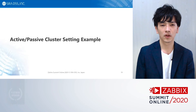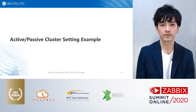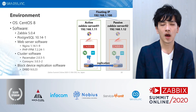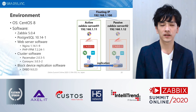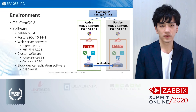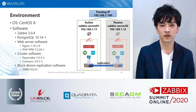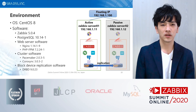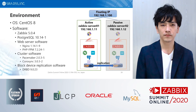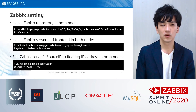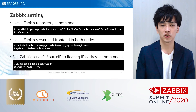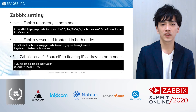I will show an example of the Zabbix Active-Passive Cluster construction method. In this example, I will build a two-node cluster. OS is CentOS 8. Zabbix version is 5.0.4. Database is PostgreSQL. Nginx and PHP-FPM are used as web server software. Cluster software are Pacemaker and Corosync. DRBD is a software for block device replication.